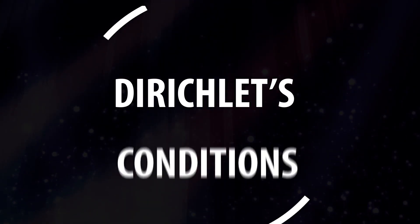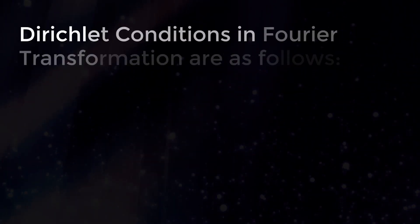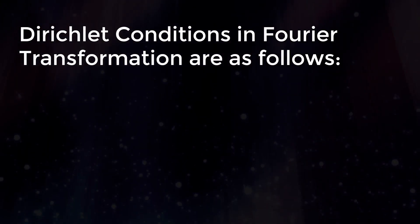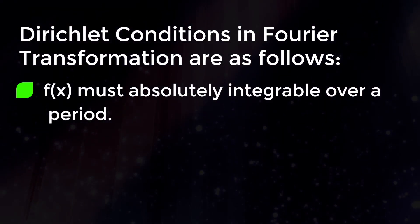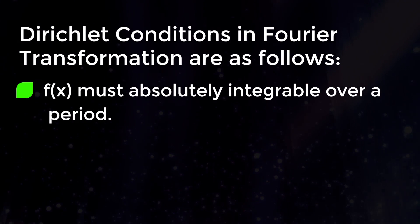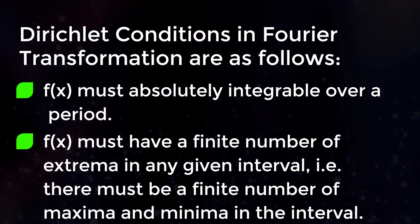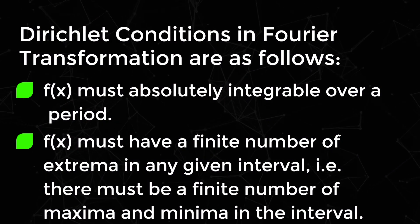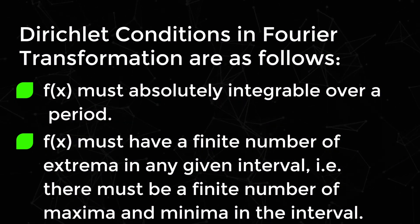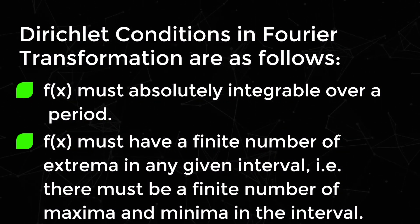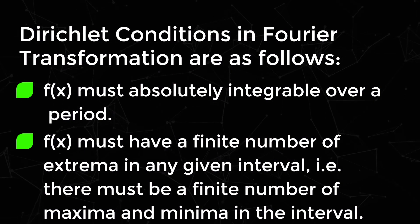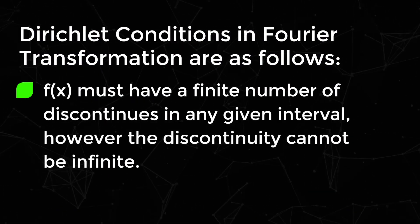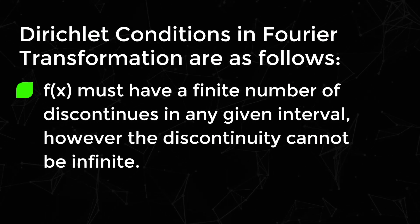Dirichlet's Conditions in Fourier transformation are as follows. f must be absolutely integrable over a period. f must have a finite number of extrema in any given interval — that is, there must be a finite number of maxima and minima in the interval. f must have a finite number of discontinuities in any given interval.